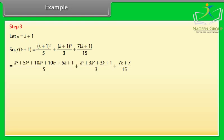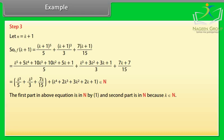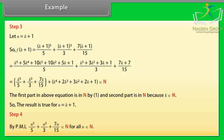By calculating it, we get f(k+1) = k⁵/5 + k³/3 + 7k/15 + k⁴ + 2k³ + 3k² + 2k + 1, which belongs to N. The first part in the above equation is in N by equation (1), and the second part is also in N. Therefore f(n⁵/5 + n³/3 + 7n/15) belongs to N for all n belonging to N.